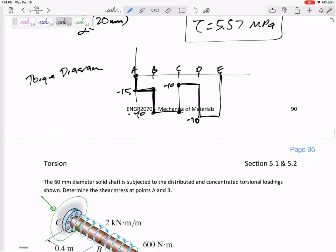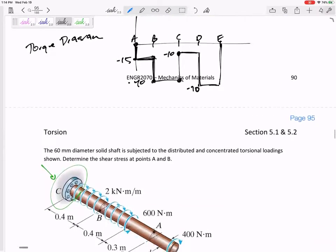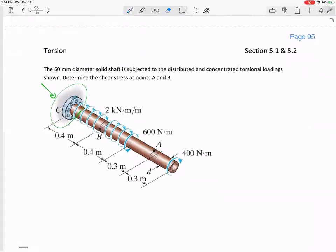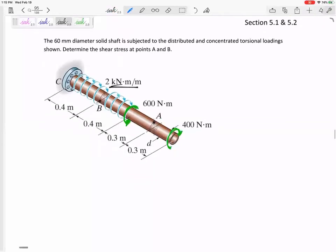Let us look at the next one. We've got a 60 millimeter diameter solid shaft subjected to the distributed and concentrated loading. So there's this distributed load of two kilonewton meters per meter. Those units are kind of weird, but we'll think about that. We've got a 600 newton meter torque here, we've got a 600 right here, and we've got a 400 over here.